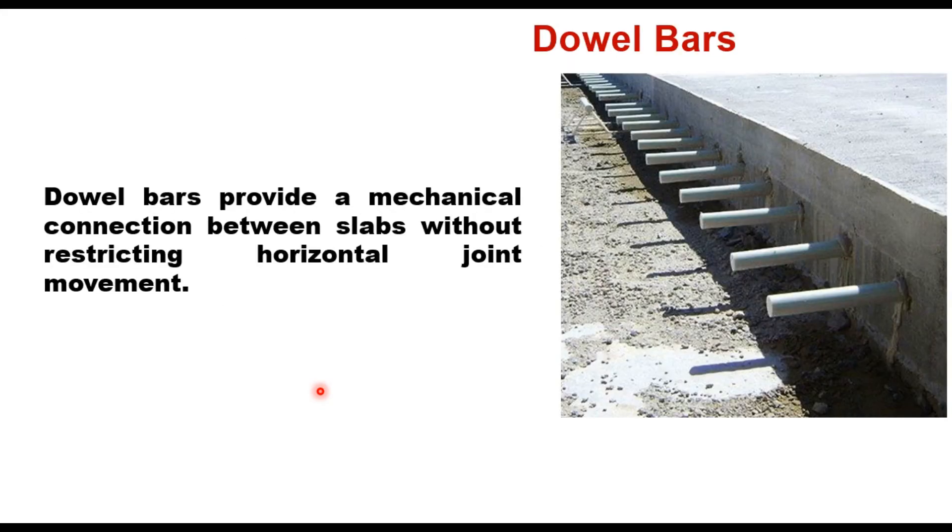There are two types of joints in a cement concrete pavement. One is transverse joint and dowel bars are provided in these transverse joints. They provide a mechanical connection between slabs without restricting horizontal joint movement. They also keep slabs in horizontal and vertical alignment. When loaded by heavy vehicles, dowel bars lower joint deflection and stress in the concrete slab and reduce the potential for joint problems by increasing load transfer efficiency.